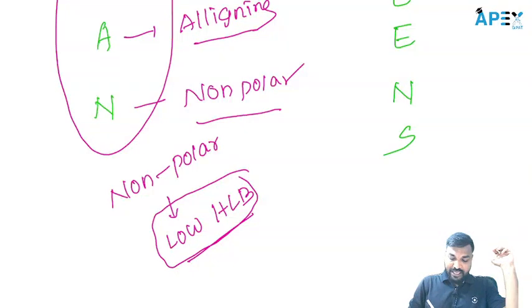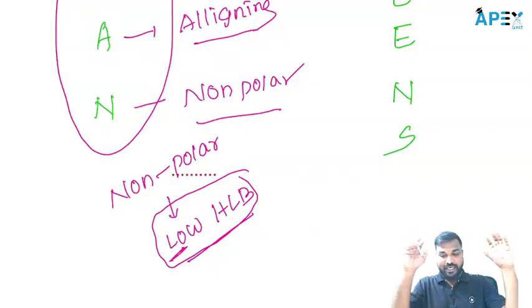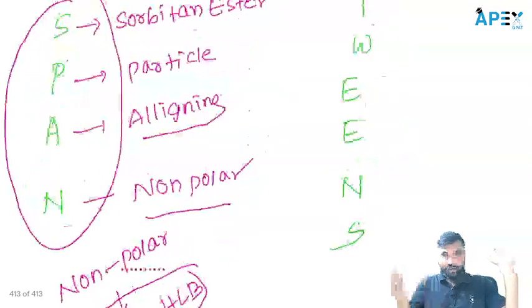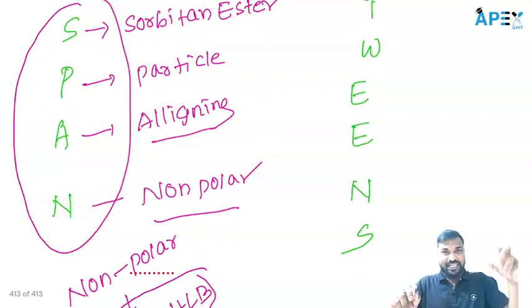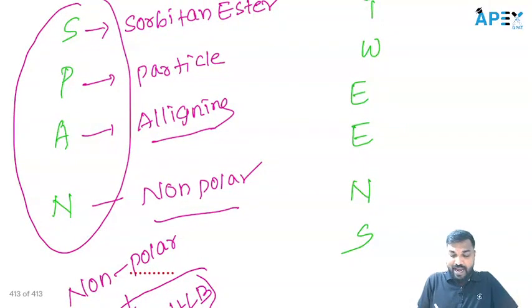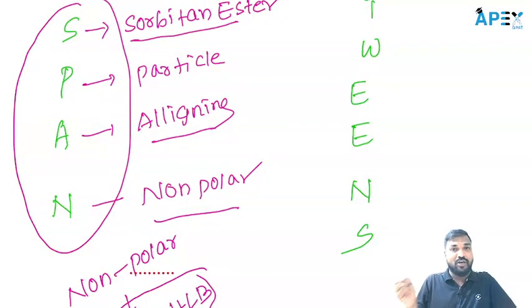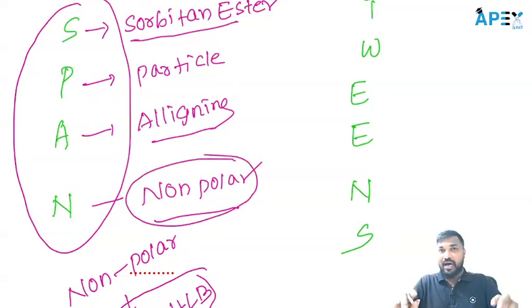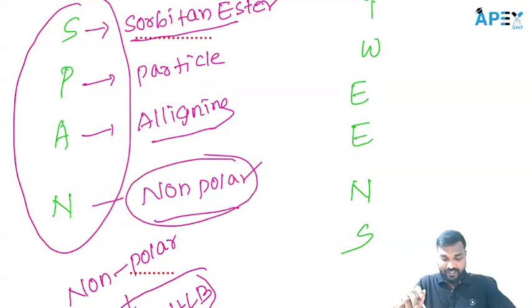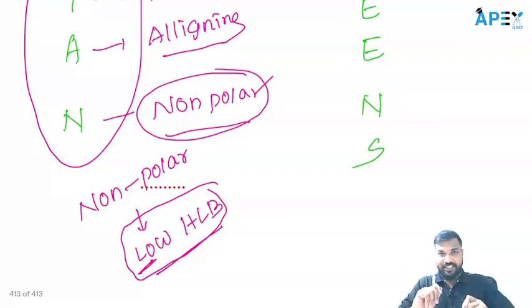So low HLB means lipophilic nature. Span: sorbiton esters, aligning non-polar, lipophilic nature, low HLB. You can easily remember this.